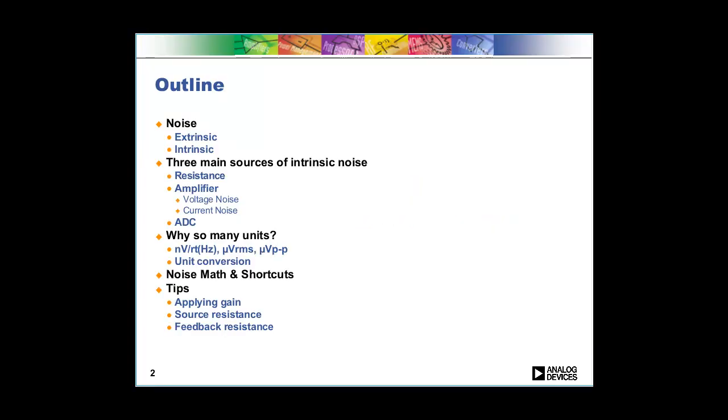Here we see an outline of what we're going to talk about today. The first thing we're going to talk about is the difference between extrinsic noise and intrinsic noise. This presentation will mainly concentrate on intrinsic noise. We want to talk about the three main sources of intrinsic noise: resistors, amplifiers, and ADCs.